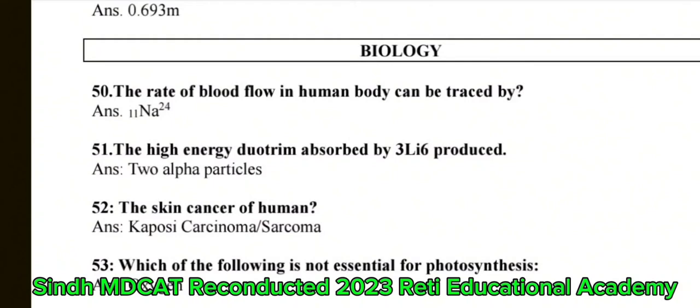Question 50: The rate of blood flow in the human body can be traced by — the correct answer is Na24. Question 51: The high-energy deuterium absorbed by Li-6 produced — the correct answer is 2 alpha particles.